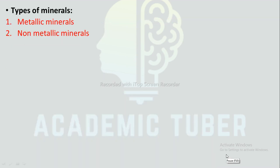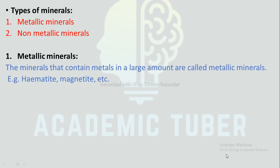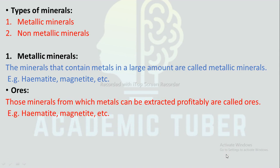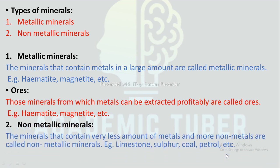Types of minerals: There are two types of minerals — metallic minerals and non-metallic minerals. Metallic minerals are those that contain metals in a large amount, for example hematite and magnetite. Ores are those minerals from which metals can be extracted profitably. Non-metallic minerals contain very little metal and more non-metals, for example limestone, sulfur, coal, and petrol.